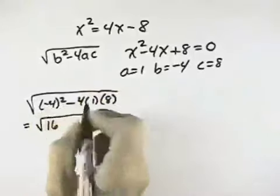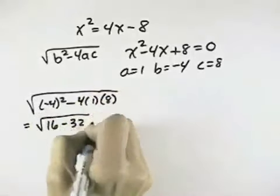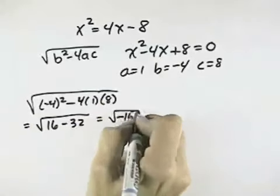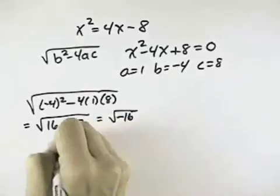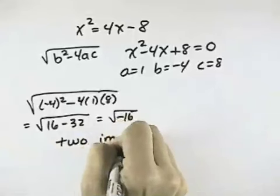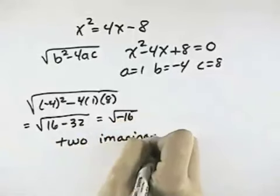And that's going to be 16 minus 32, which equals the square root of negative 16, which is imaginary. So because that's an imaginary number, I will have two imaginary solutions.